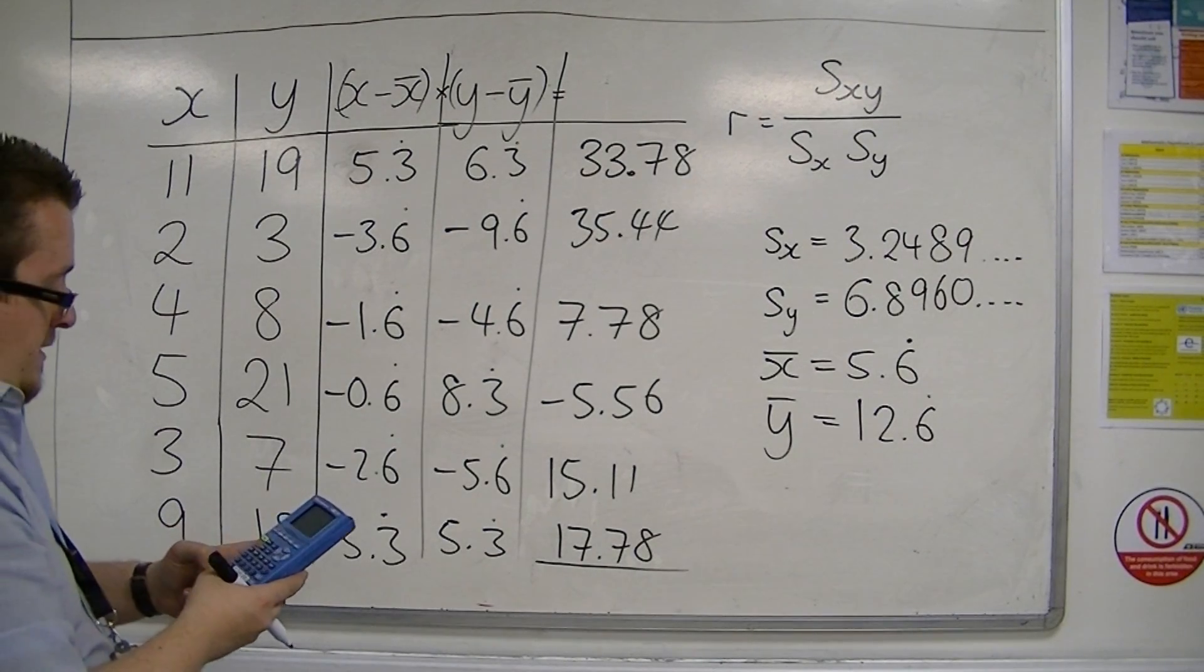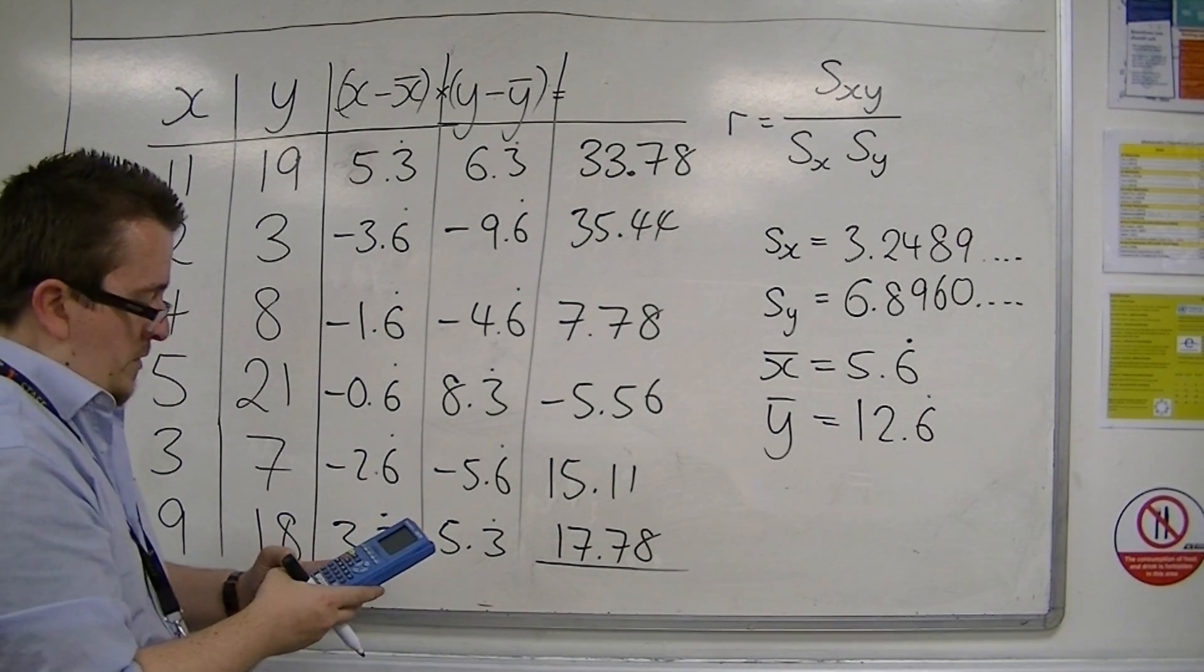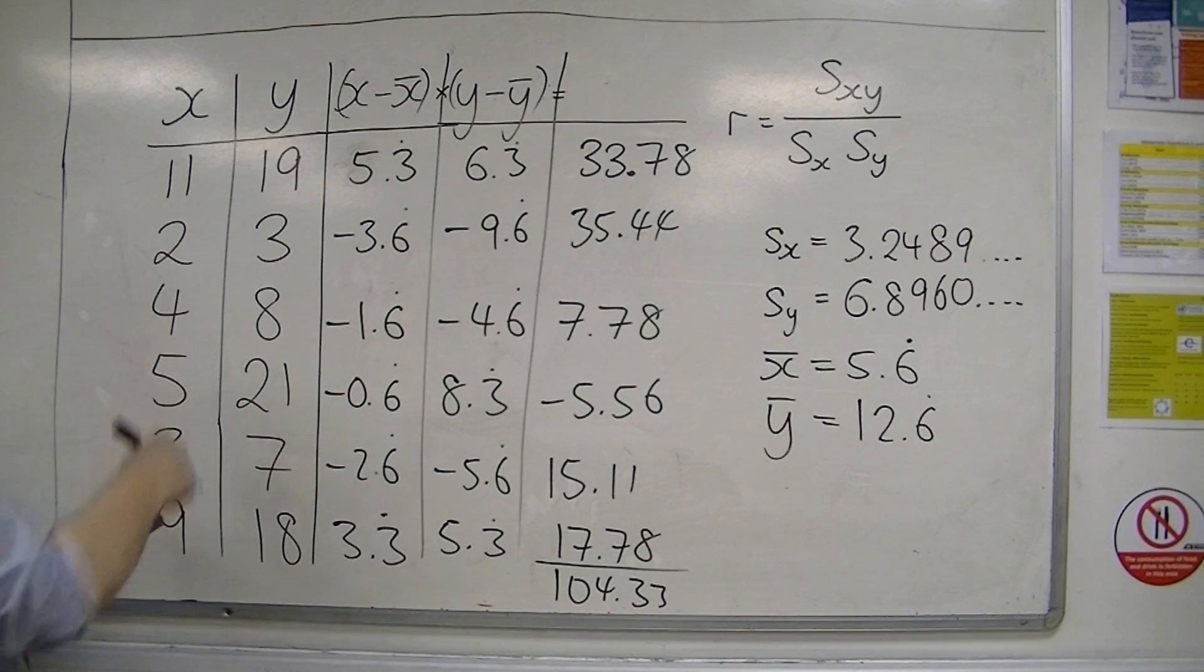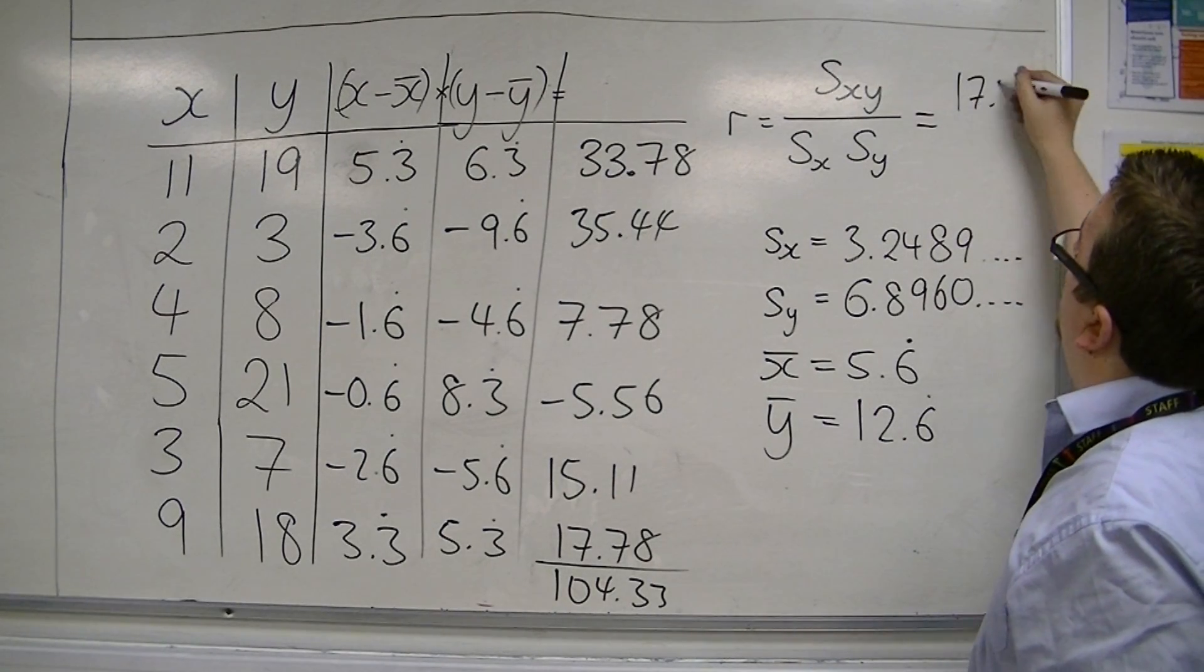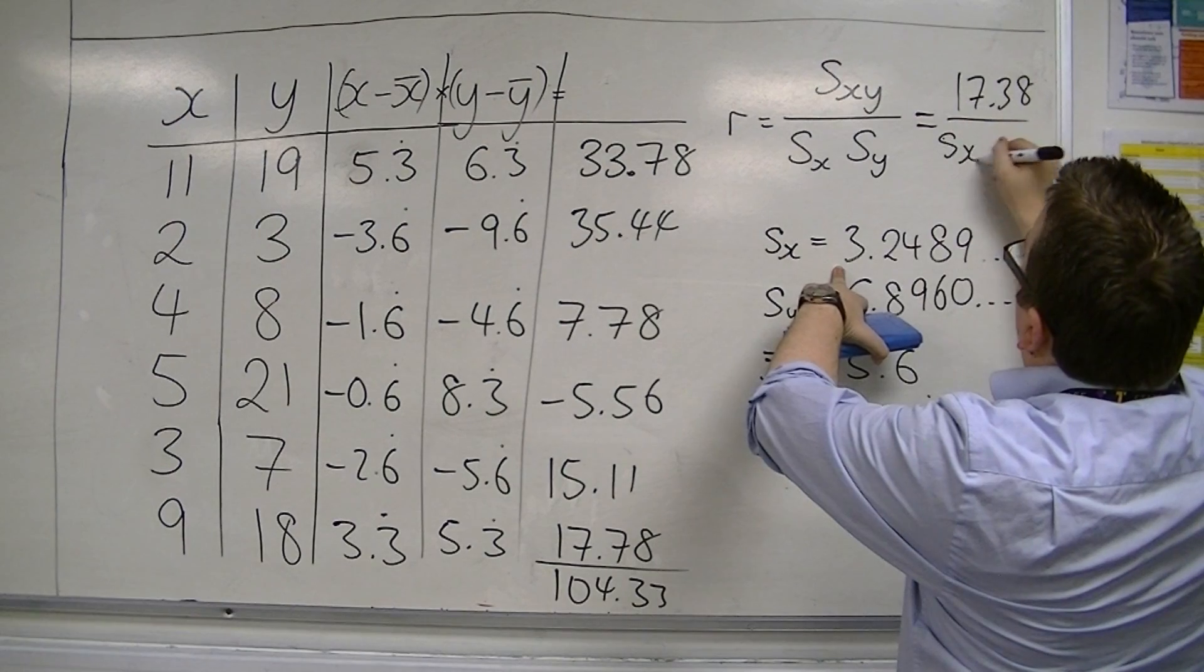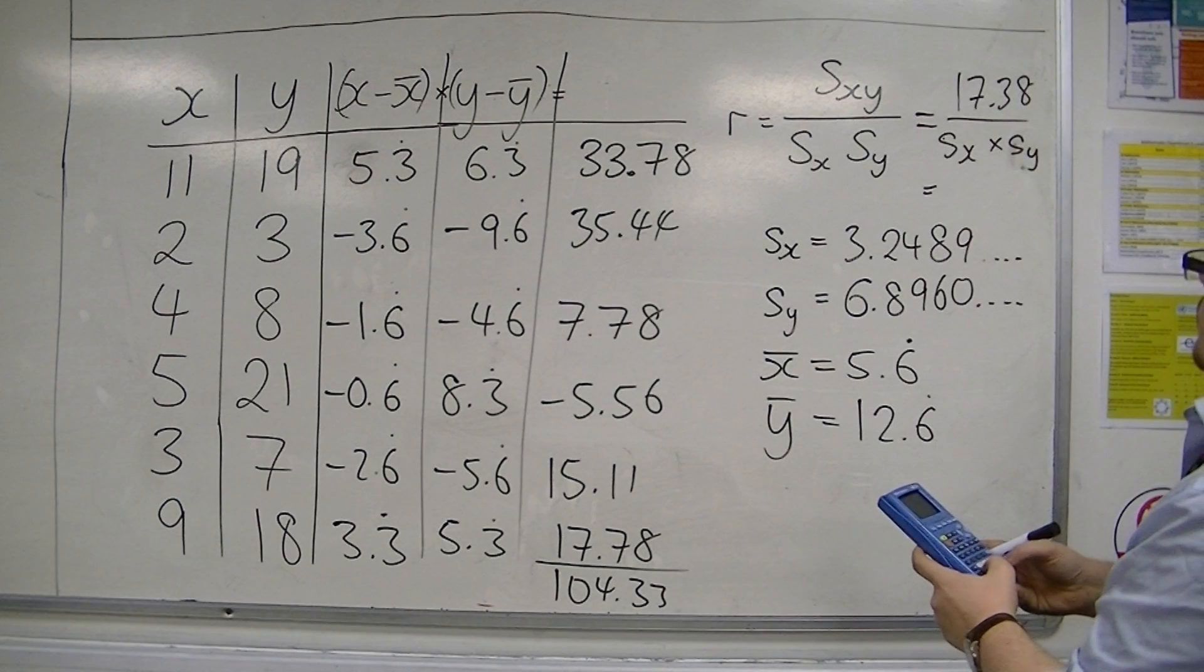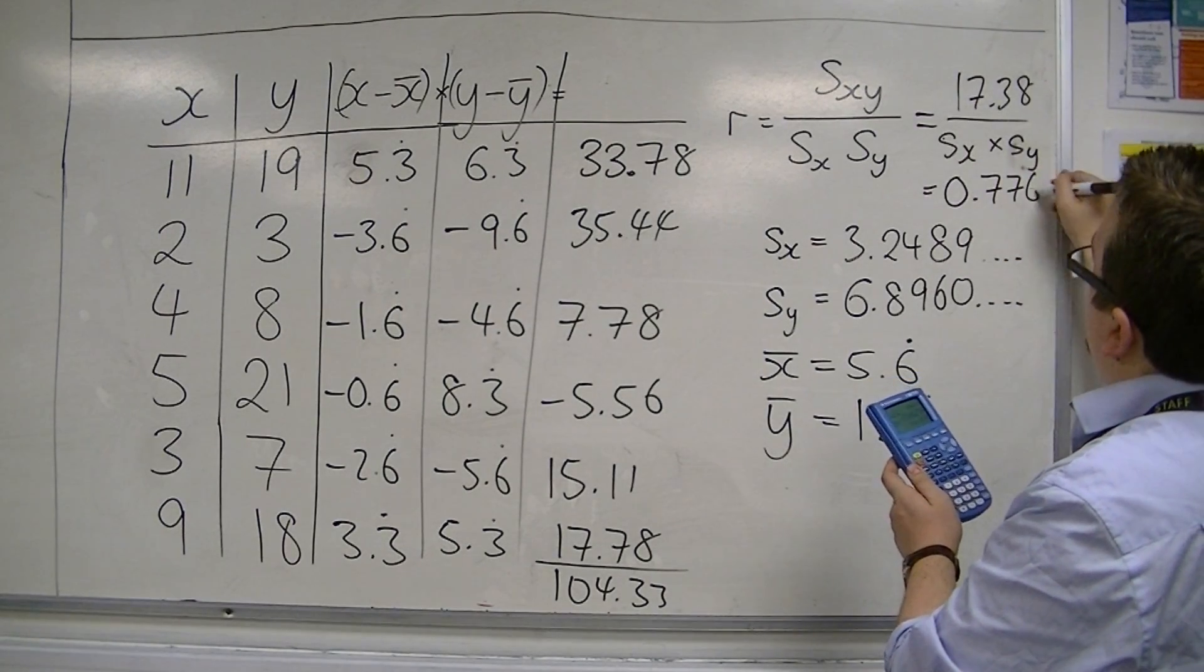Right, I'm going to need to add those together. So we've got 33.78 plus 35.44 plus 7.78 take away 5.56 plus 15.11 plus 17.78 is 104.33. You then divide that by n, the number of numbers that you have, so that's divided by 6, and that gets you 17.38 approximately. So we've got 17.38 divided by 3.2489, and multiplied by the 6.8960, and I get 0.776, roughly.